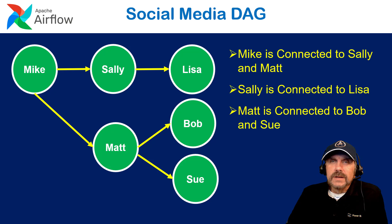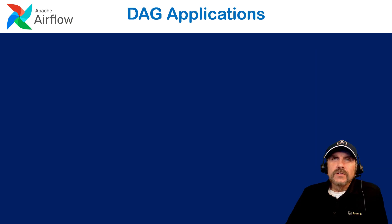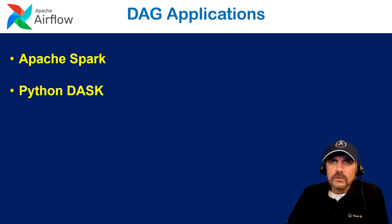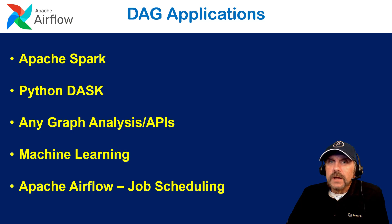Let's look at a social media example, because you see DAGs a lot with graph APIs. Mike has a relationship on social media with Sally and Matt. Sally has a relationship with Lisa. Matt has a relationship with Bob and Sue. DAGs are used in many applications: Apache Spark uses them for distributing work and optimizing execution under the covers. Python Dask uses DAGs to schedule work and create dependencies. Graph analysis APIs, machine learning with tree structures, and Apache Airflow itself are all applications of DAGs.